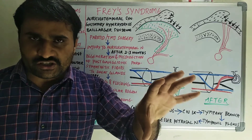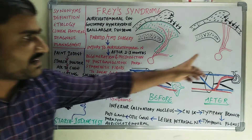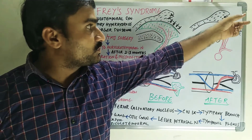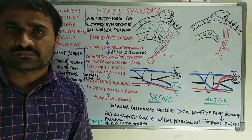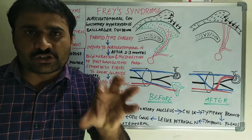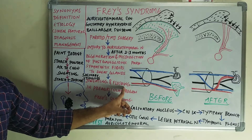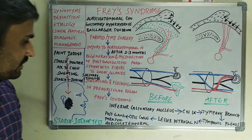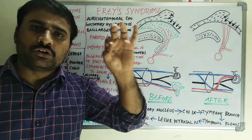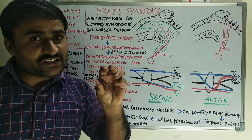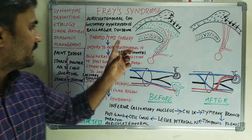On salivary stimulation — sight of food or taste — due to salivary stimulation these parasympathetic fibers get activated. Because they are redirected and connected to the sweat glands, the sweat glands become activated, resulting in sweating and flushing. Flushing is vasodilation causing increased blood circulation, slightly elevated temperature or erythema in the preauricular region — the operated region — resulting in Frey's syndrome. The two important points: injury to the auriculotemporal nerve and misdirection connecting sweat glands with post-ganglionic parasympathetic fibers.